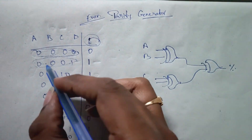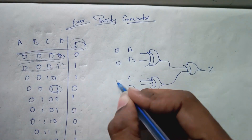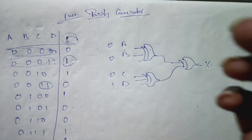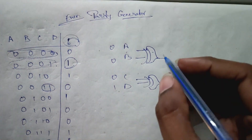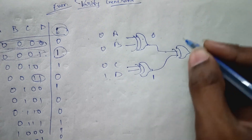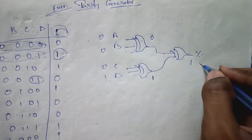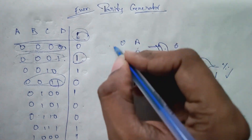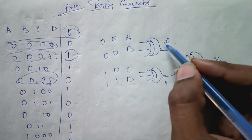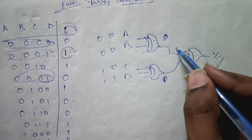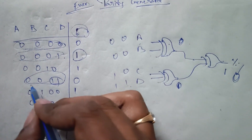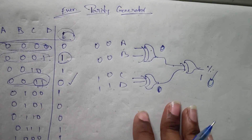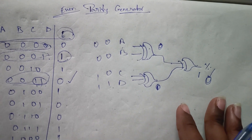Let us verify: suppose we give input 0 0 0 1. The required output should be 1. For the first XOR gate, inputs 0 and 0 are the same, so output is 0. For the next XOR gate, inputs 0 and 1 are different, so output is 1. Then 0 XOR 1 gives 1 — we obtained the correct output. Now let us verify 0 0 1 1: both pairs are same, so outputs are 0 and 0, giving final output 0. The functionality is verified.